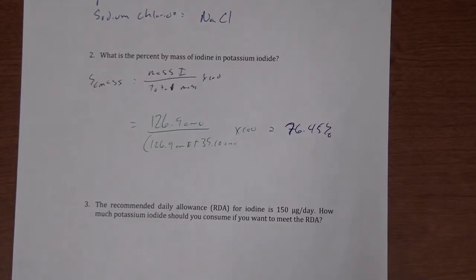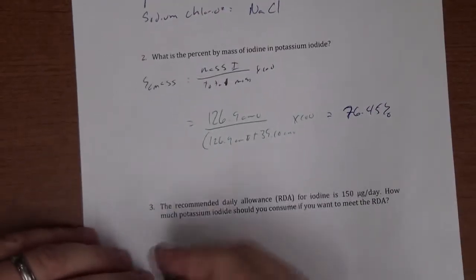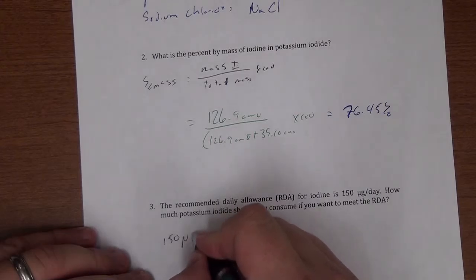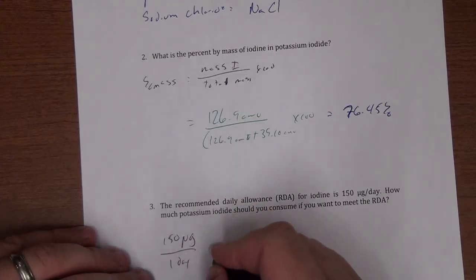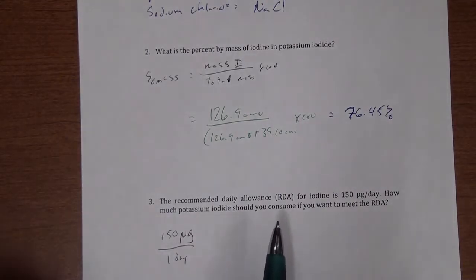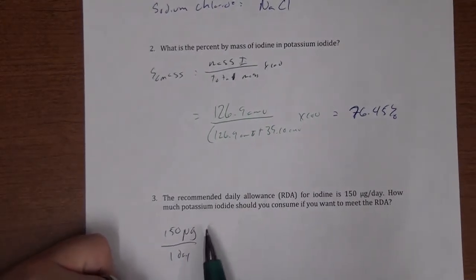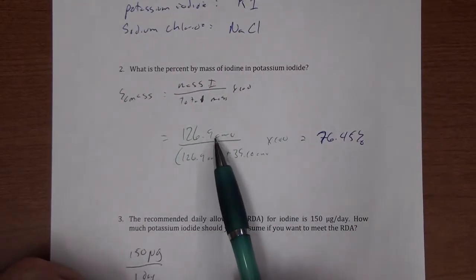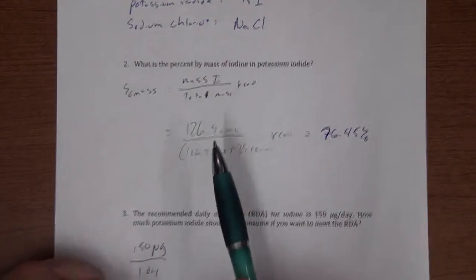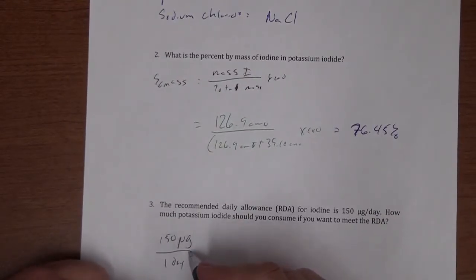The last question: the recommended daily allowance (RDA) for iodine is 150 micrograms per day. How much potassium iodide should be consumed to meet that RDA? We need to convert from micrograms to grams, then use the percent by mass to find the total amount of KI needed.